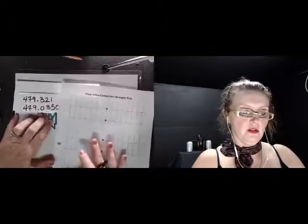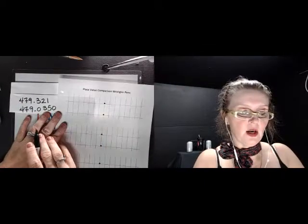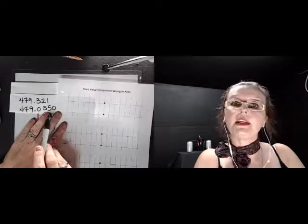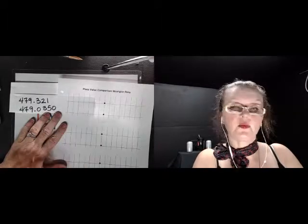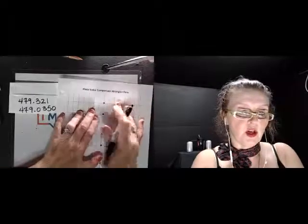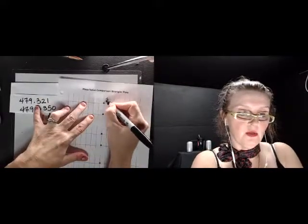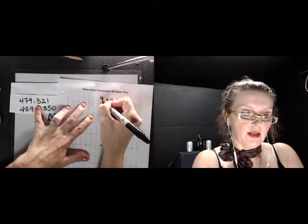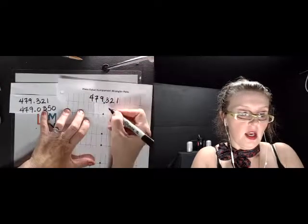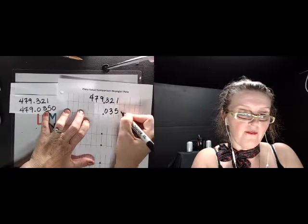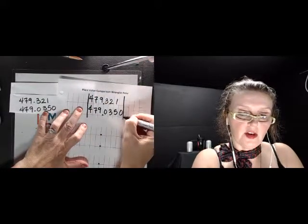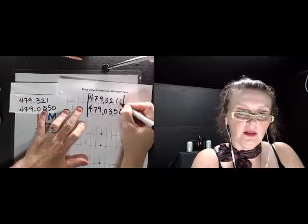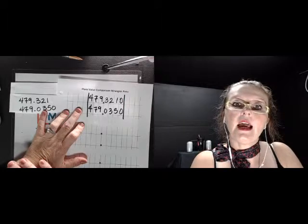So here we go, this one's a fun one. 479.321 versus 479.0350. More digits here leads a kid to believe that maybe this is the bigger one. 321 versus 350, well 350 is bigger than 321, so this one still seems to be the bigger one. So we go to our handy dandy wrangler pen. So there's our decimal, we go do 321, and there's a 9 there, there's a 7, there's a 4. And then in the other one we have 0350 and 9 and 7 and 4. Go to the very edge, go to the very edge, so the last one, any place that we have a spot we put a zero in.